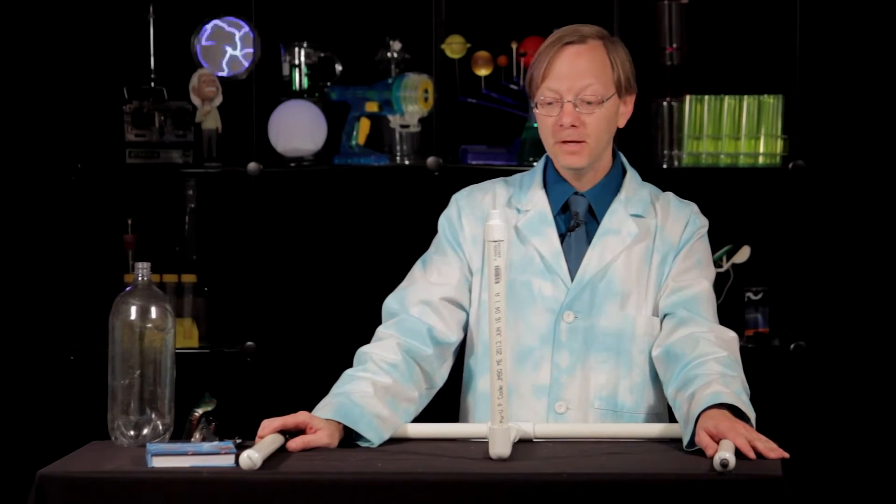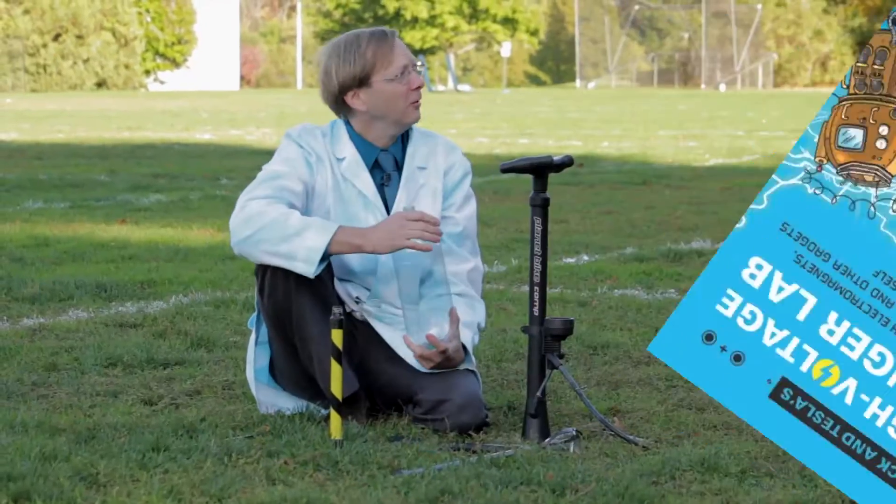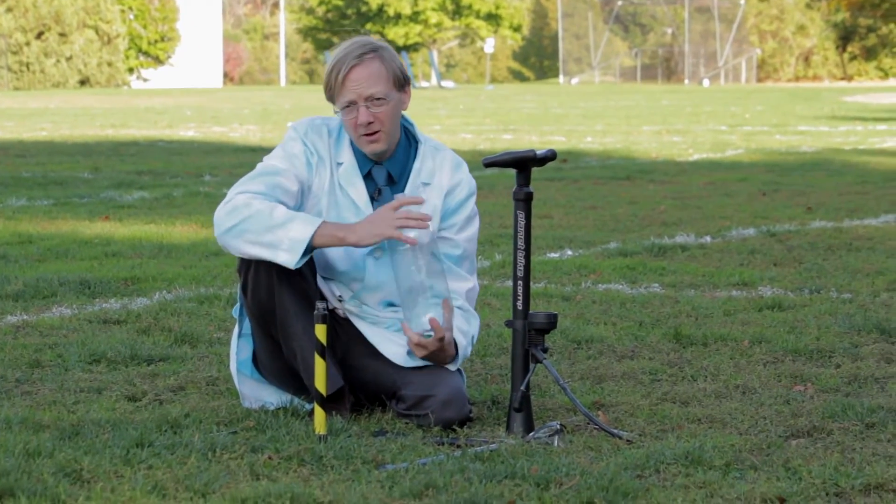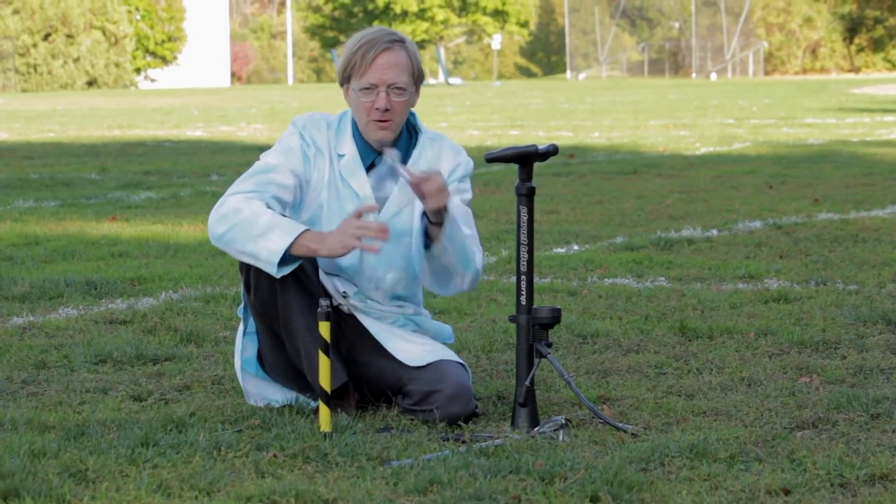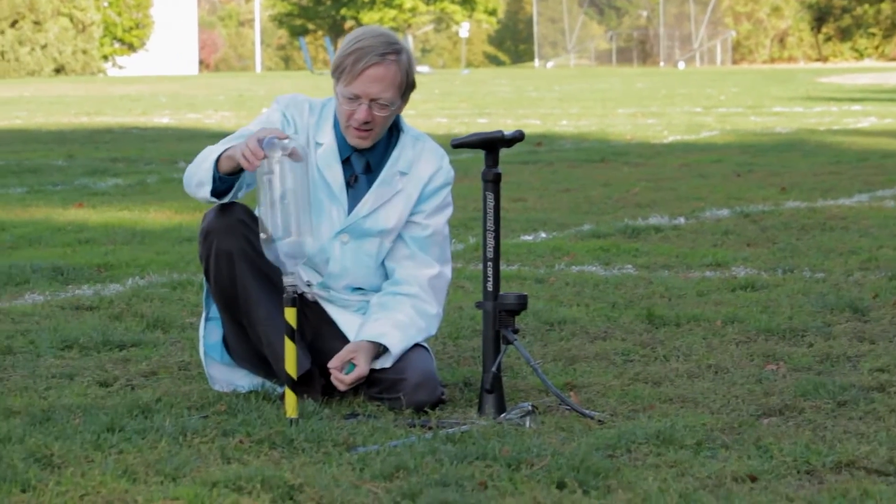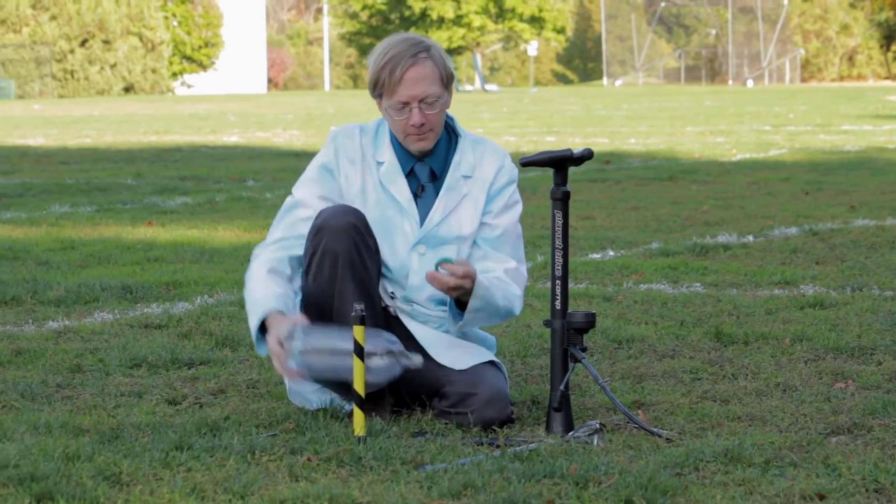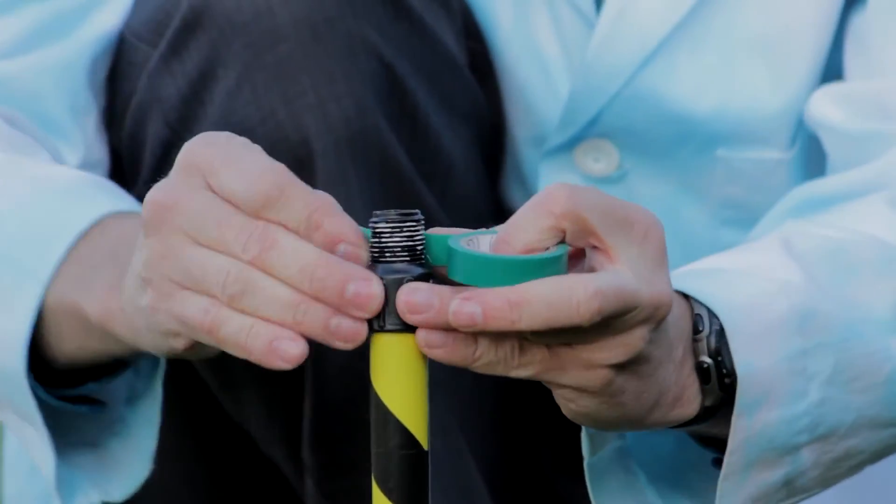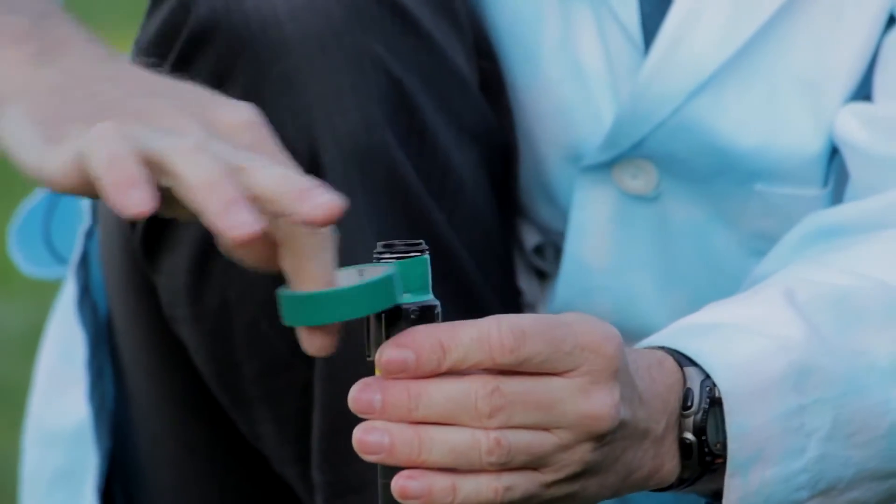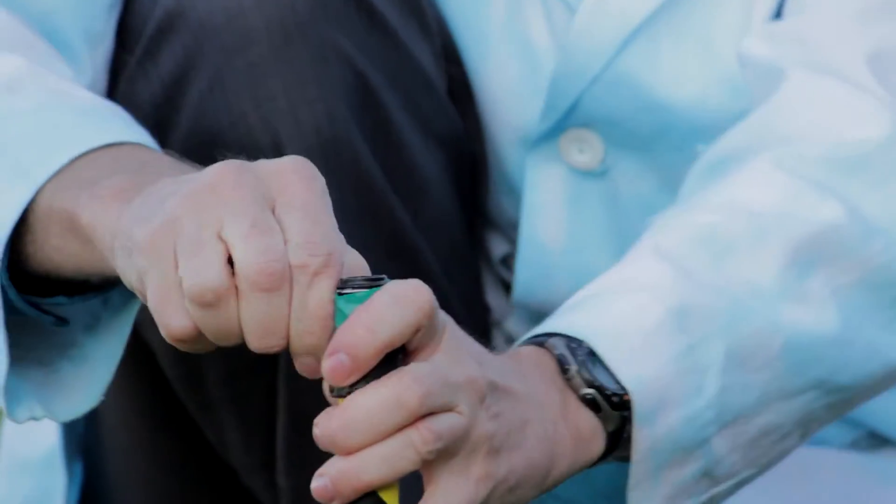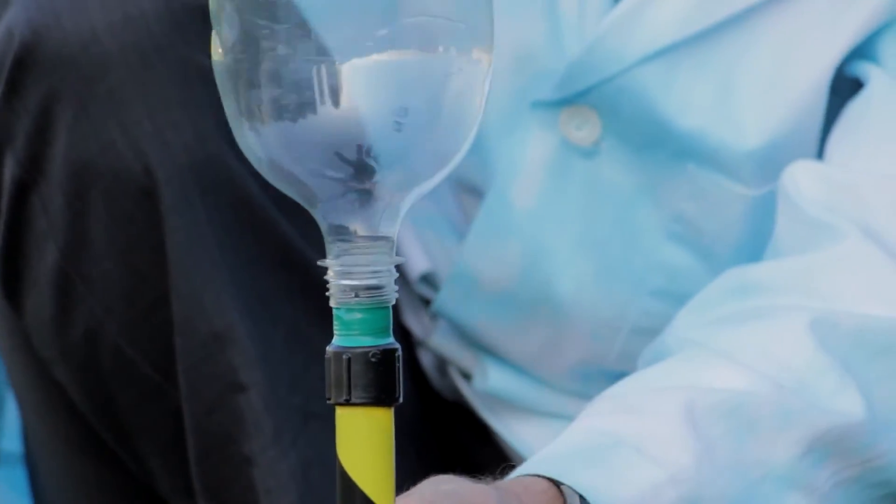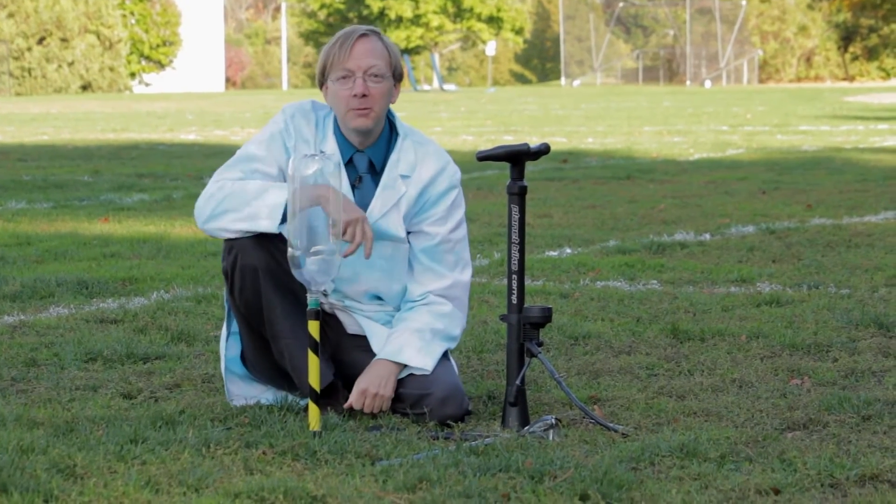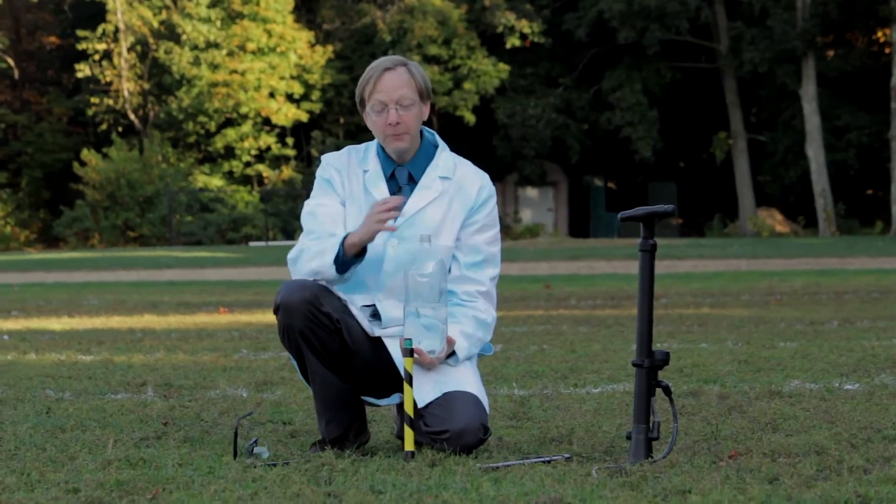Once you have that all done, then you're ready to go outside. All right, so here we are in the beautiful outdoors, ready to launch our bottle rocket. But we have one last adjustment we need to make. Right now this bottle is a little loose onto this cap, so to fix that we're going to take a little bit of electrical tape and wrap it around the threads of the adapter. Keep doing that a little bit at a time until you get a nice snug fit.